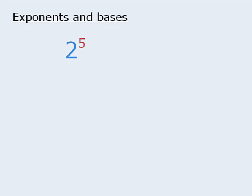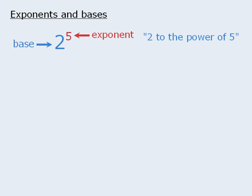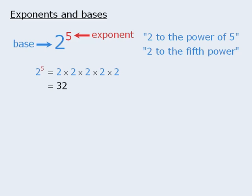In this expression, the bottom number is called the base, and the top number is called the exponent. This particular expression can be read as 2 to the power of 5, or 2 to the 5th power. The exponent 5 tells us to take the base of 2 and multiply it by itself 5 times. This equals 32, so 2 to the power of 5 equals 32.